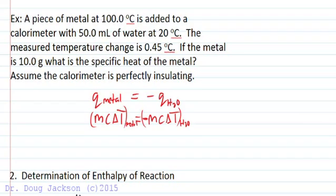So for the mass of the metal, if the metal is 10 grams, so we have 10.0 grams for the metal. We are trying to solve for the specific heat of the metal, so we'll leave that in. And so if the measured temperature change is 0.45 degrees Celsius, that is a positive value.